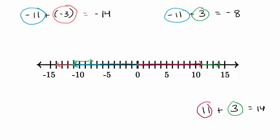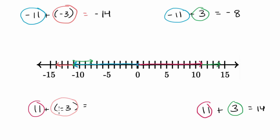Now let's do the other way around. If we had positive 11 plus negative three, what is that going to be equal to? Well, we've already drawn positive 11 here, but now we're adding negative three. So now we're going to add negative three to positive 11 — we start here, but we're going to go three to the left because it's negative: one, two, three. And where do we end up? We end up at positive eight.